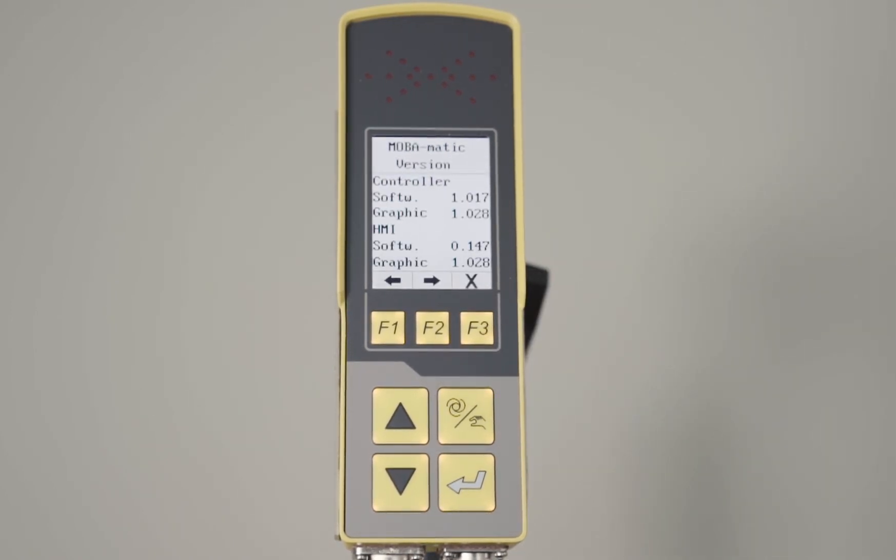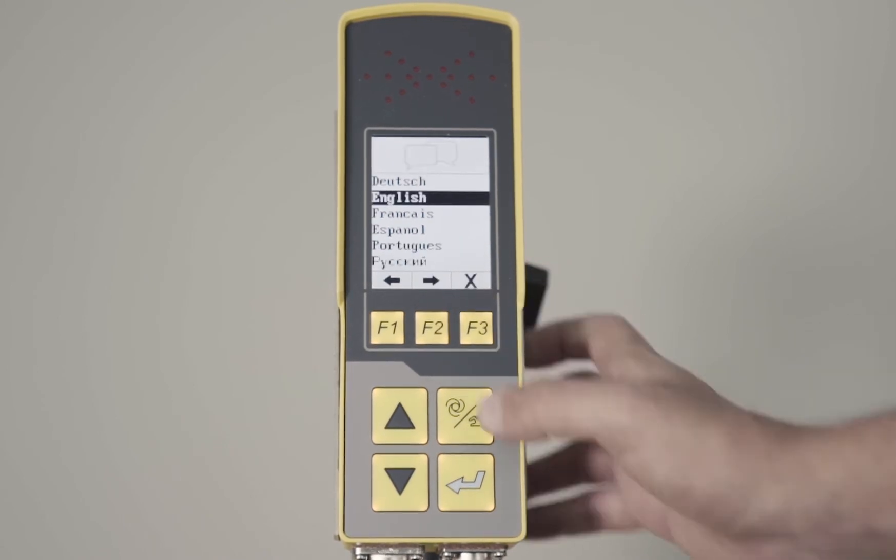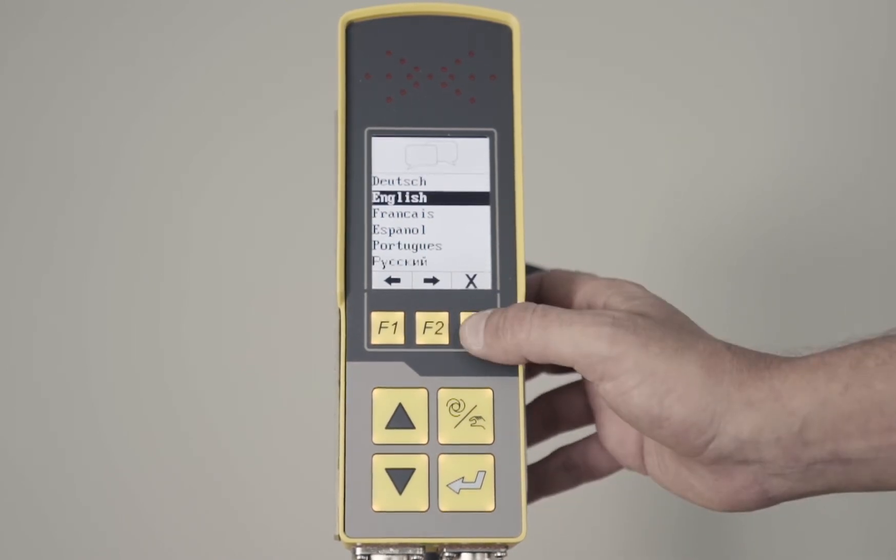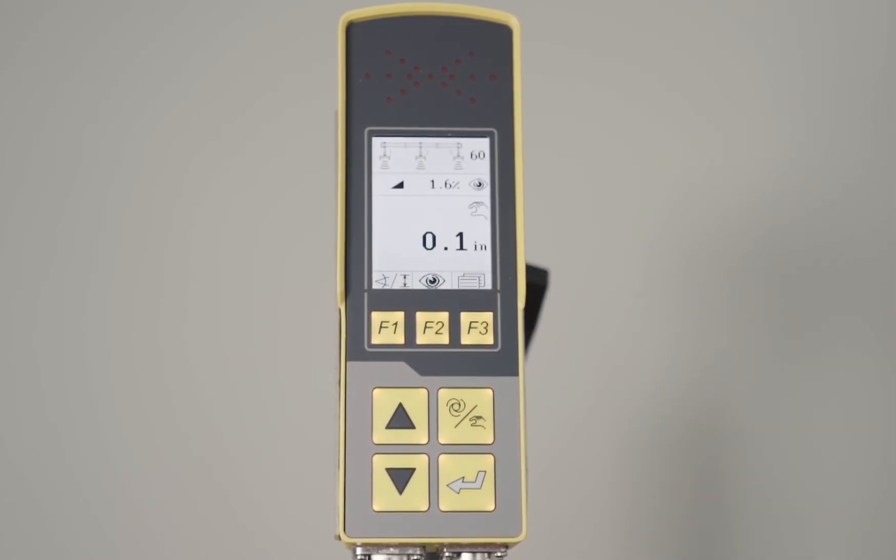And then we come to the software version here for the Mobomatic controller. Bring it back again. We're back to English. Hit F3 the X to get out of there and we're back to our main menu. Those are the features of the back of the technician's menu of a Mobomatic 2 controller.